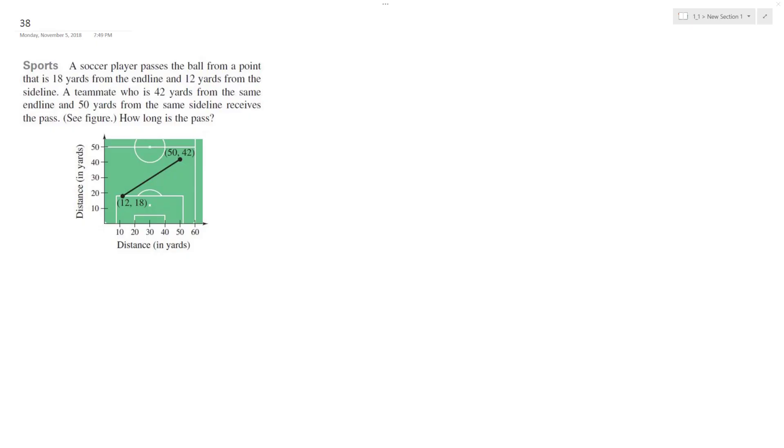Alright, so what we have here is a soccer player passes a ball from a point on the line at 12, 18 to somebody that's at 50, 42.